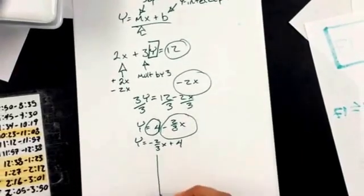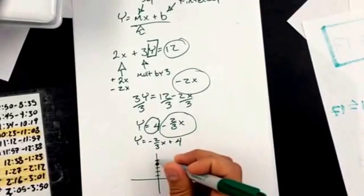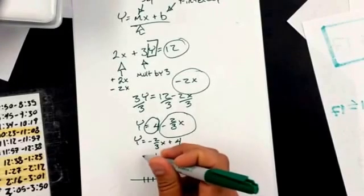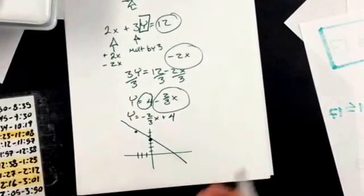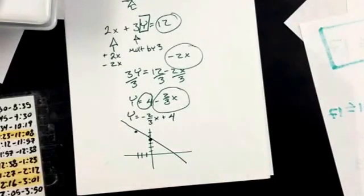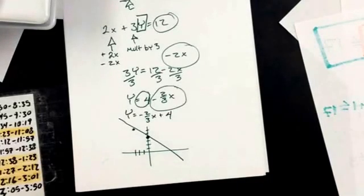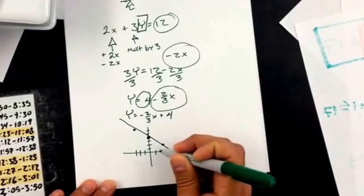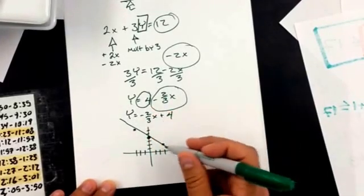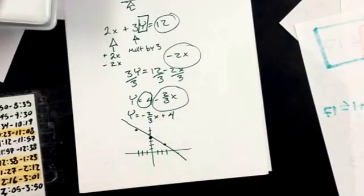To graph this, I'm just going to start at the y intercept, which is 4. I'm going to go up 2 and to the left 3 because it's negative. And then I connect those two points. I do a poor job of connecting them, but I do connect them. Now any point on the line, any two points on the line have a slope of negative 2 thirds. So if I went down 2 and to the right 3 here, I still would have been on that line.